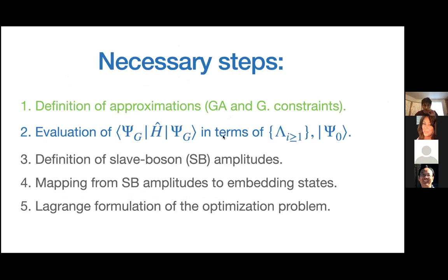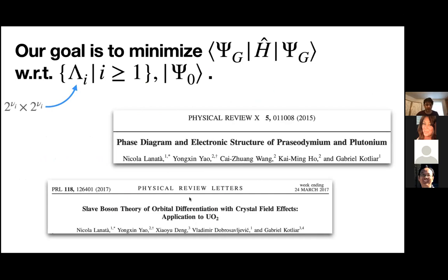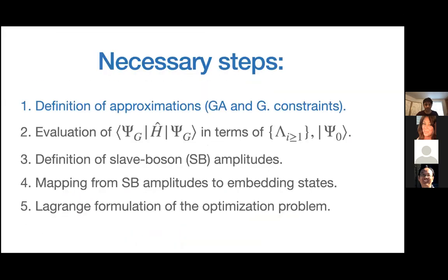You do get the slave boson perspective from the references mentioned. This paper is formulated in terms of the GA and this one in terms of the rotational invariance slave boson theory — in fact, that was the paper where the operator formulation of rotational invariance slave boson theory was derived. Let's continue.